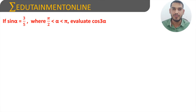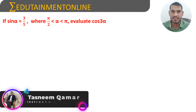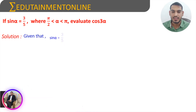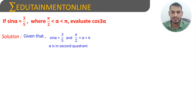If sin α equals 3/5, where π/2 is less than α is less than π, evaluate cos 3α. It is given that sin α equals 3/5 and α is between π/2 and π, which means it is in the second quadrant — between 90 degrees and 180 degrees.